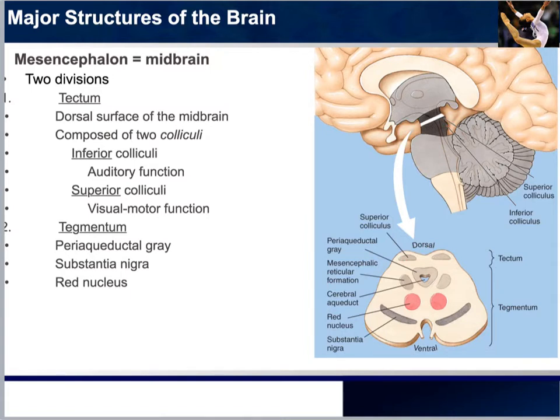The inferior colliculi are known for auditory functions, whereas the superior colliculi are active during visual motor functions. We'll discuss this in more detail in Chapters 6 and 7. The cross-section shown here is a horizontal plane.